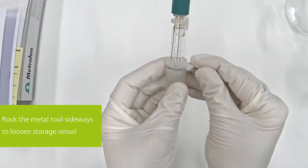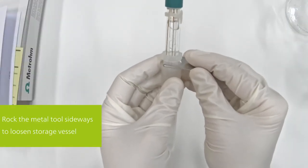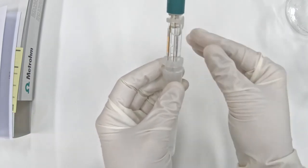Rock the tool sideways until the storage vessel loosens. Remove the electrode.